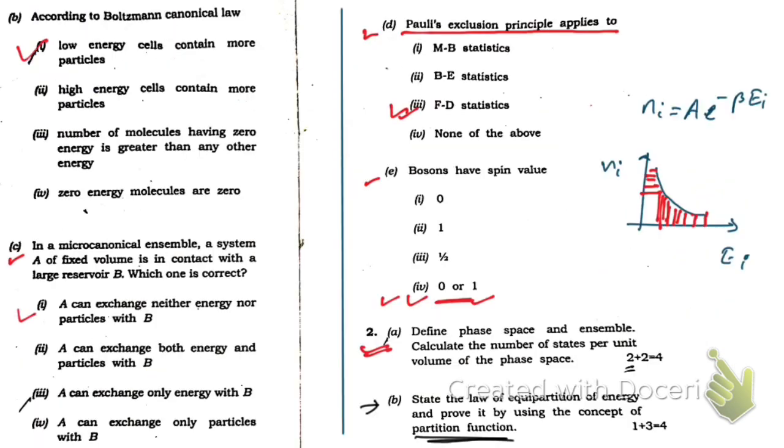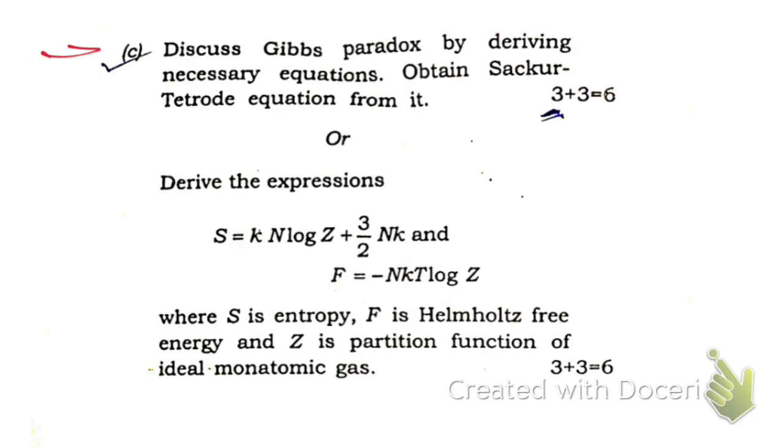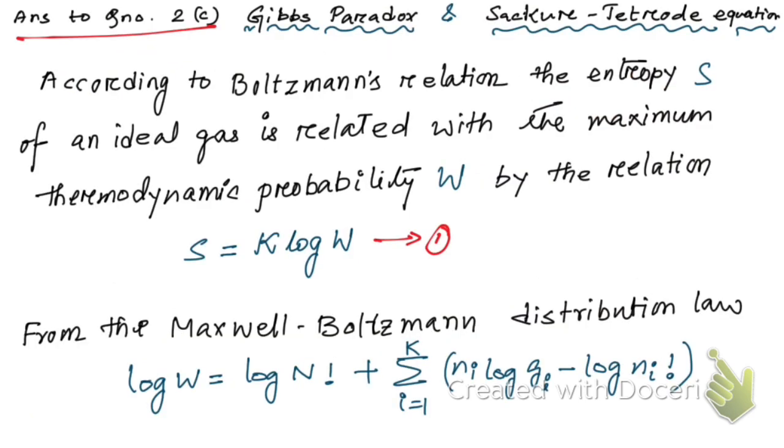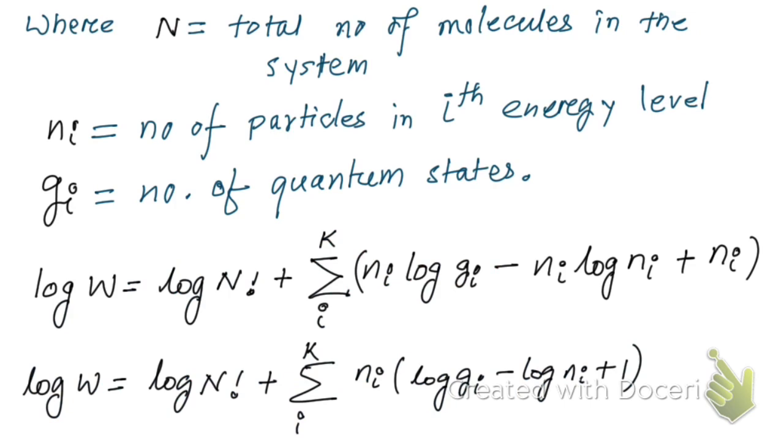Here you can see this is 2c: discuss Gibbs paradox by deriving necessary equations and obtain the Sackur-Tetrode equation from it. Let me give you the answer. From here question number 2c starts. This is the first page. I'm not going to explain this, my motive is to give the answers that you need.